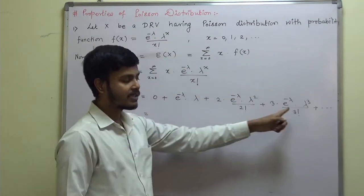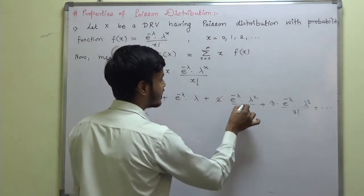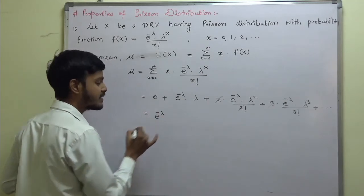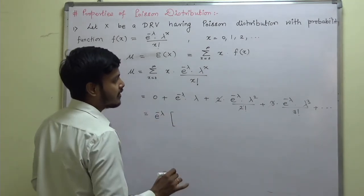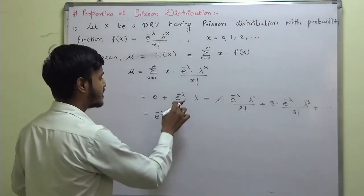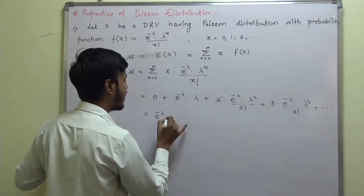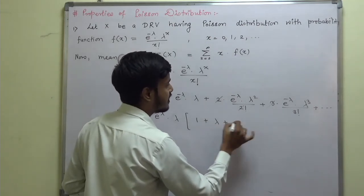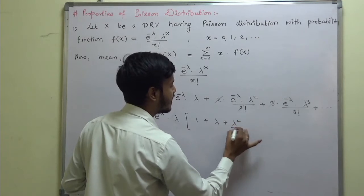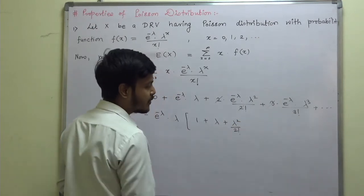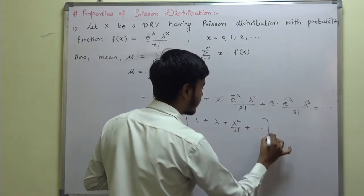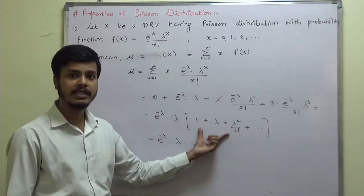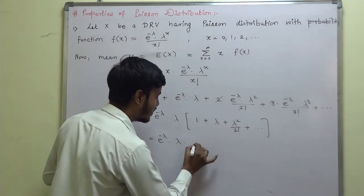We can take e^(−λ) and λ common from each term. What remains is e^(−λ) · λ · (1 + λ + λ²/2! + λ³/3! + ...). This series inside is nothing but the expansion of the exponential function e^λ.